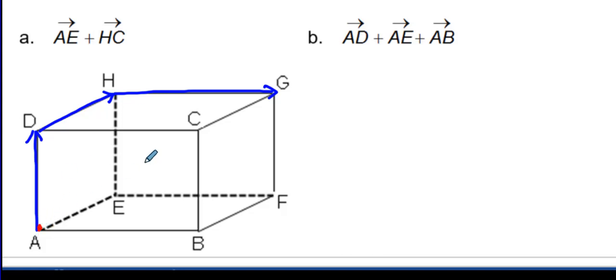So then the resultant vector, I'll do it in red, would be from A all the way to G. There it is. That's the resultant vector. So the answer would be vector AG would be our answer.